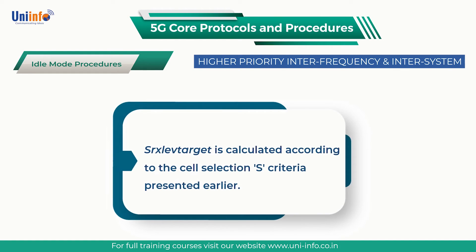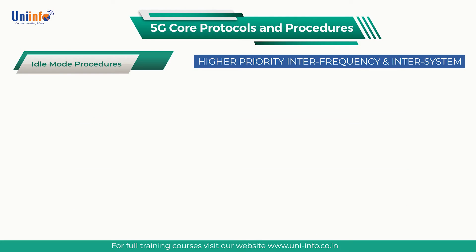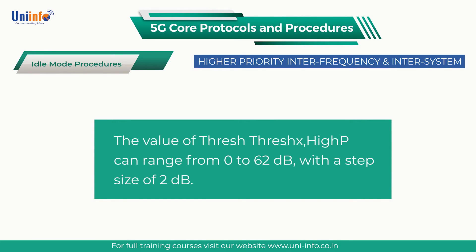S-Rx level target is calculated according to the cell selection S criteria presented earlier. SIB4 broadcasts threshold high priority for inter-frequency neighbors whereas SIB5 broadcasts threshold high priority for inter-system neighbors. The value of threshold high priority can range from 0 to 62 dB with a step size of 2 dB.